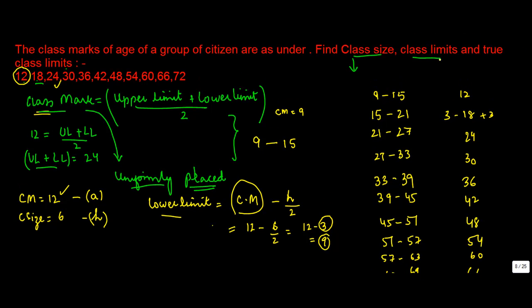By this, I got the class limits. Now, you are also told to find out the true class limits. Now, what is a true class limit? True class limit arises in case of inclusive method. They are not arising in case of exclusive method. If you notice this particular class size, you have 15 here, 15 here. So this is the exclusive data that we have. Hence, the limits that we have found here are also going to be the true class limits.